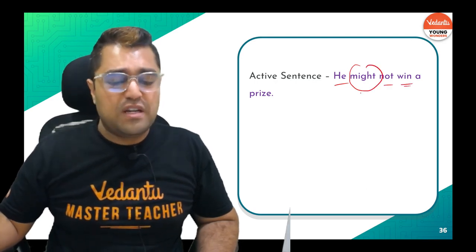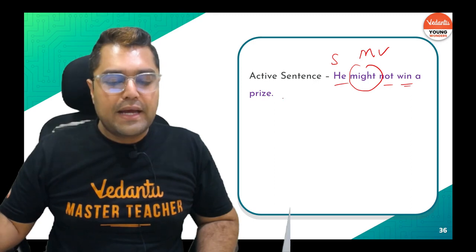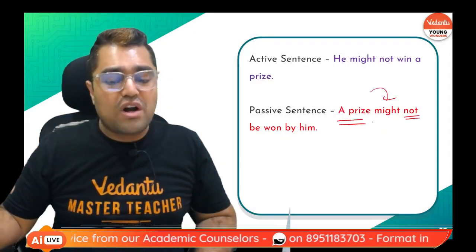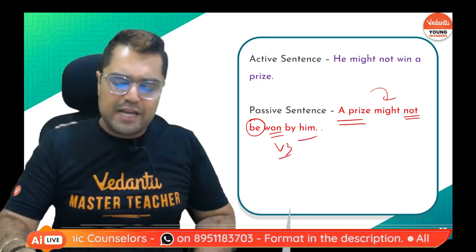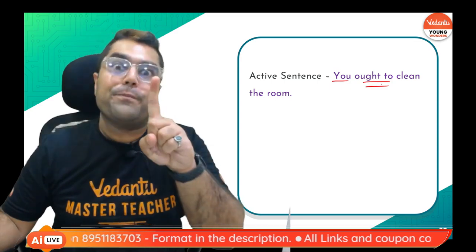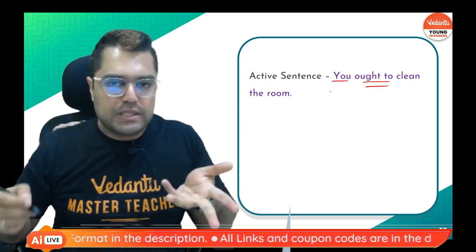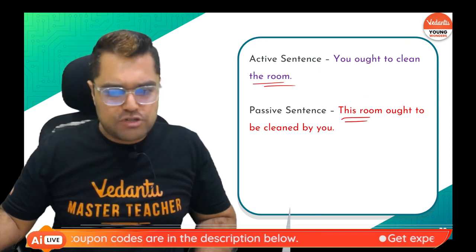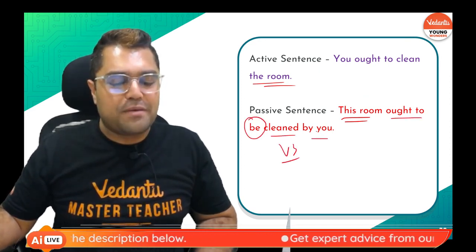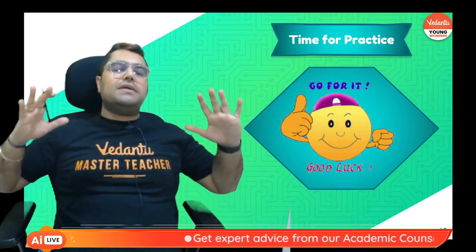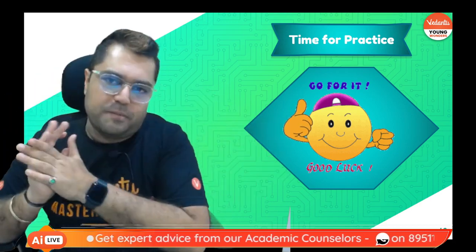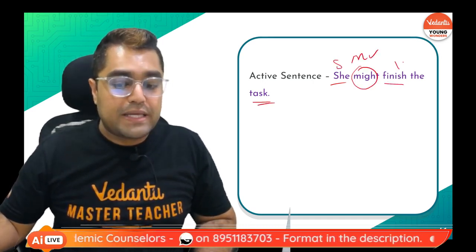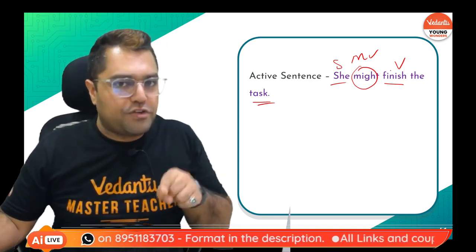Another example: 'He might not win a prize.' Subject = he, modal = might not, object = a prize. Subject and object interchange, V3, 'by': 'A prize might not be won by him.' Next: 'You ought to clean the room.' — 'ought to' is a modal verb. Interchange, add 'be + V3 + by': 'The room ought to be cleaned by you.' Practice: 'She might finish the task.' — pause, write, give the answer in the comment section.